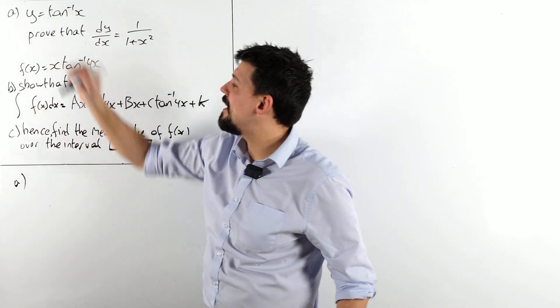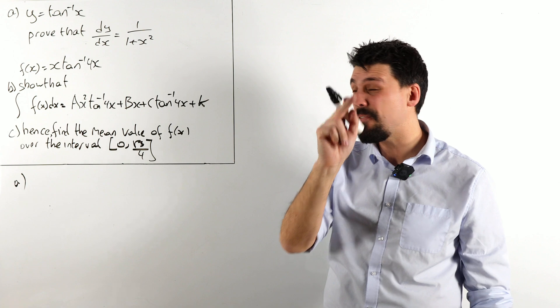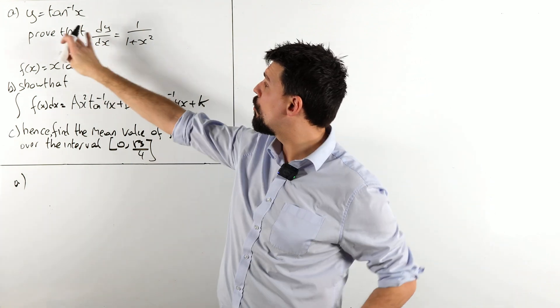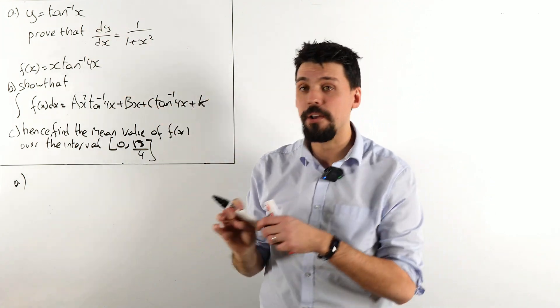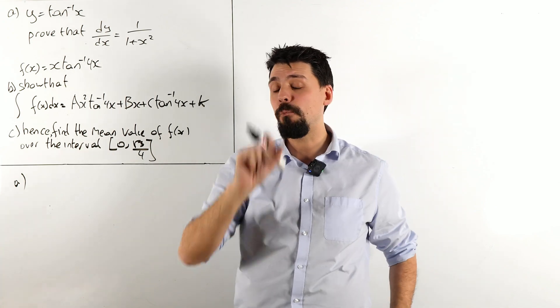First things first, if y is tan minus one of x, that is inverse tan to you and me, prove the result dy dx is one over one plus x squared. Right, where do we start?